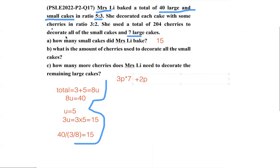It says all the small cakes and only 7 large cakes, so we take that times 15 equals 21 parts plus 30 parts.